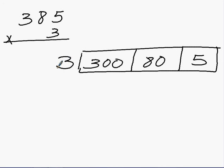So now we're going to simply multiply each box. So, 3 times 300, 900. 3 times 80, 240. And 3 times 5, 15.